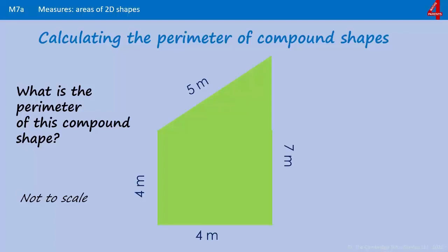Some compound shapes can include a triangle as well as a rectangle. One word of warning: if you're someone who understands Pythagoras, you will probably notice that some of these triangles do fit into the rules of Pythagoras and some don't. I've merely created these to illustrate how to find the perimeter of a compound shape, so they might not be sophisticated enough for somebody who understands Pythagoras. If you don't know what Pythagoras is, don't worry about it yet.